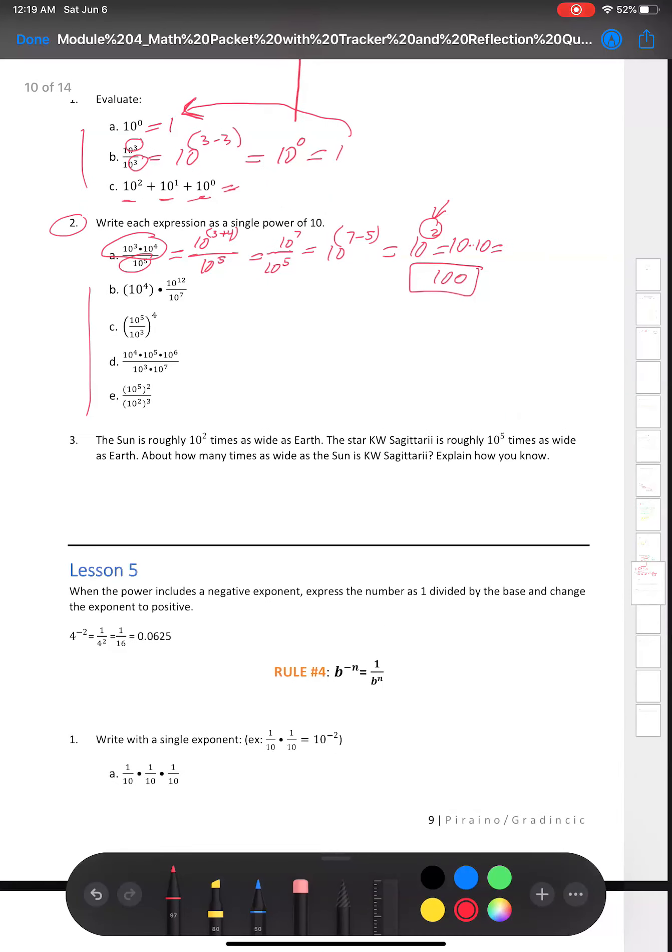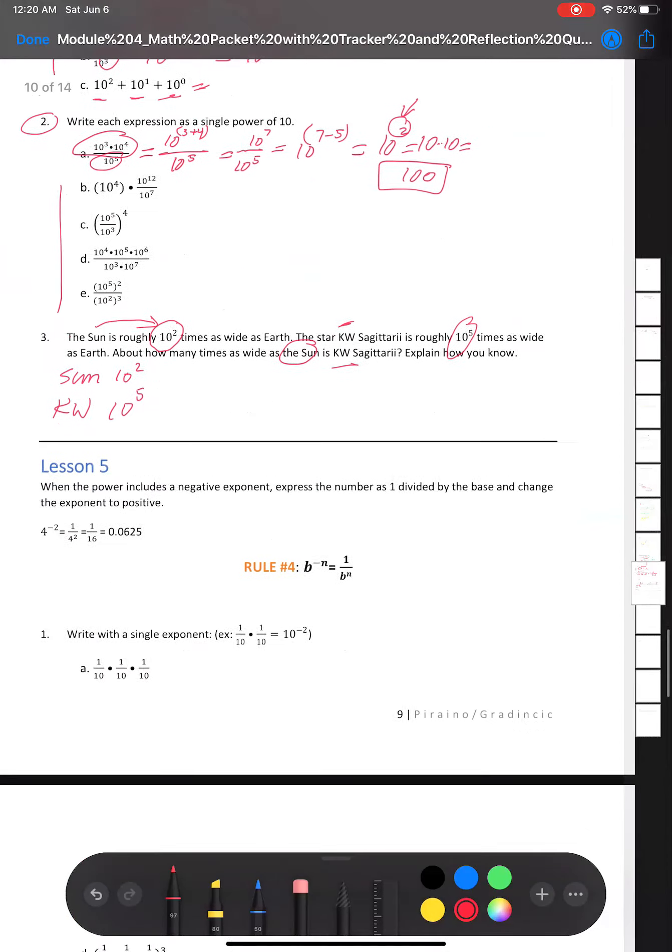And then number three is a challenge question. Let's read that. The sun is roughly 10 to the second power times as wide as Earth. The star KW Sagittarii is roughly 10 to the fifth power times as wide as Earth. About how many times as wide as the sun is KW Sagittarii? Explain how you know. So we are comparing sun and KW. Sun is 10 to the second as wide as Earth. And this KW star is 10 to the fifth power times as wide as Earth. So think about it. You're going to use some of these rules from previous lessons.